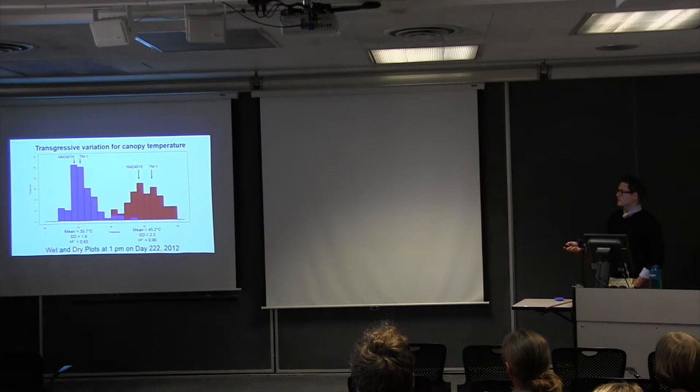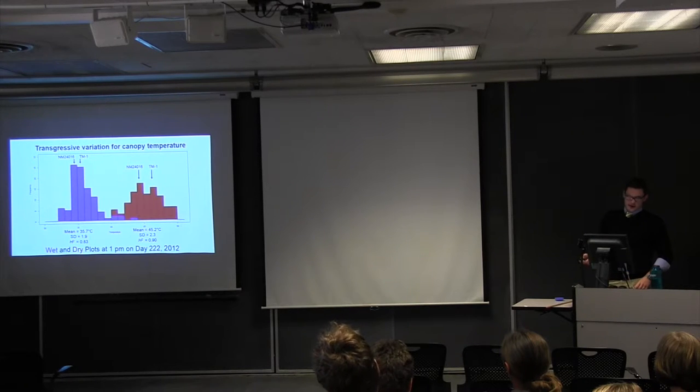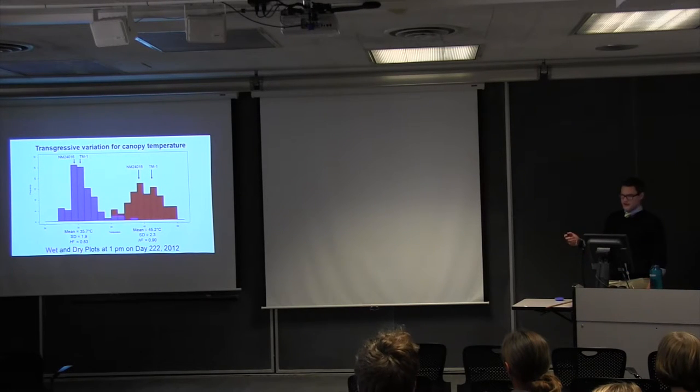Given this, you can also see we have here the parents of the population. And this is the idea of transgressive variation. In fact, progeny, some of these lines do actually get more favorable genes from either parent, and therefore they outperform either parent. So this is what we're looking for in terms of developing new varieties, is varieties that have these canopy temperature properties in terms of being able to stay cooler.